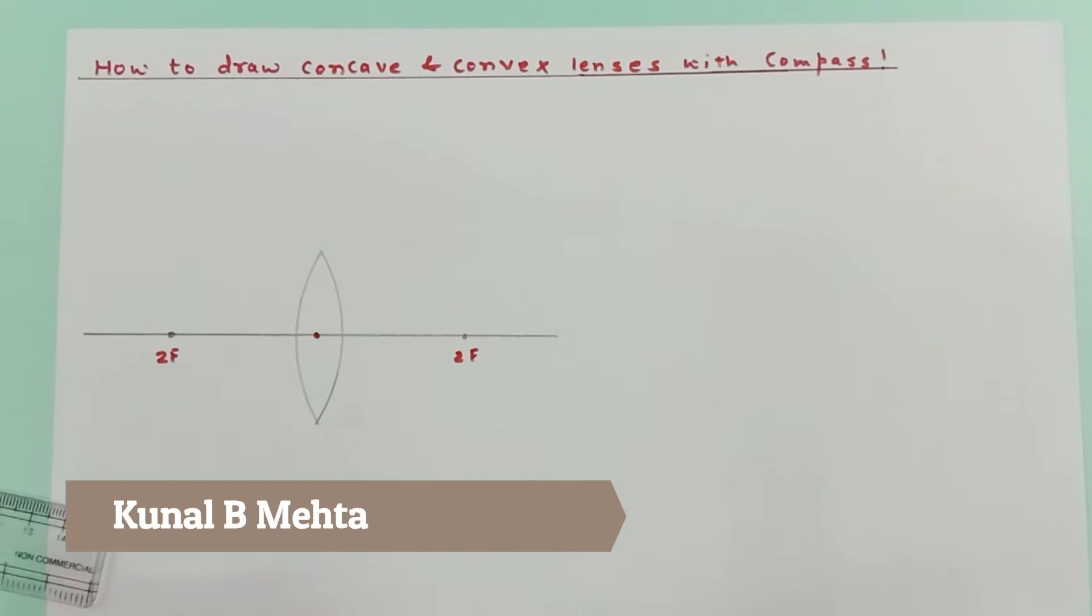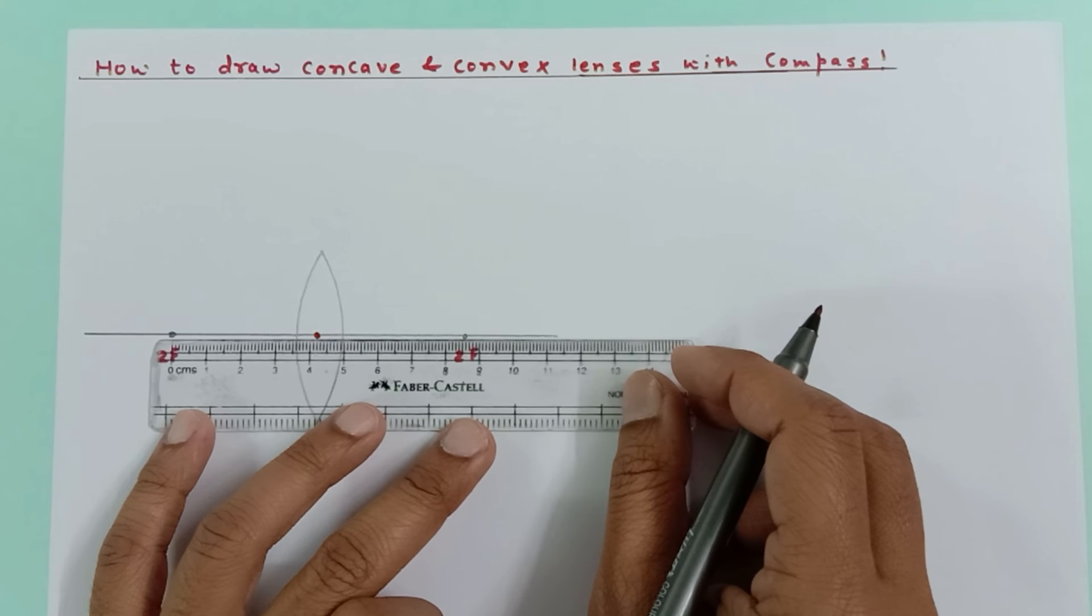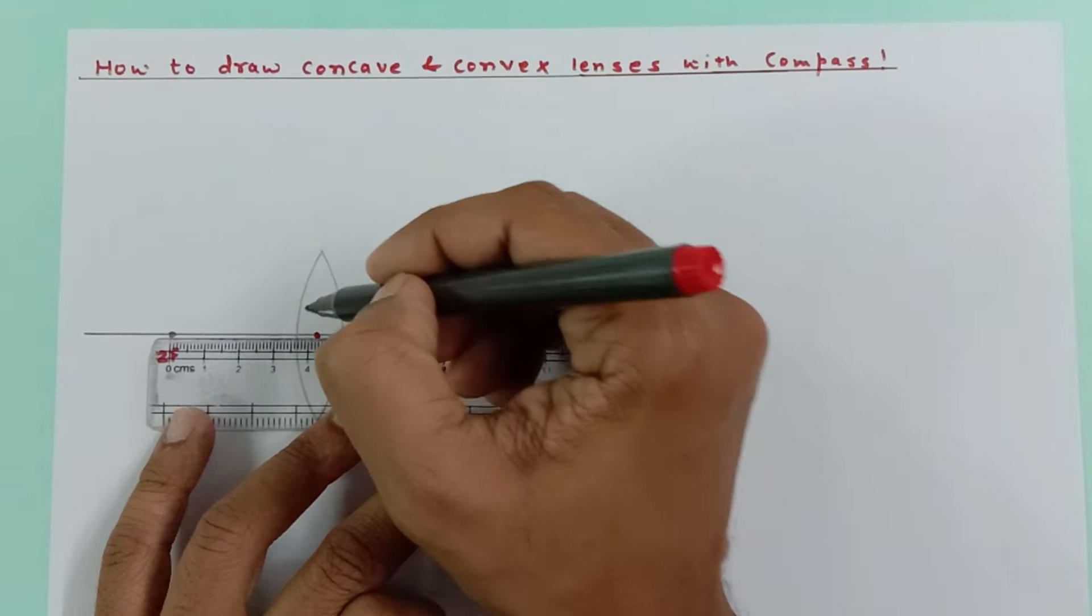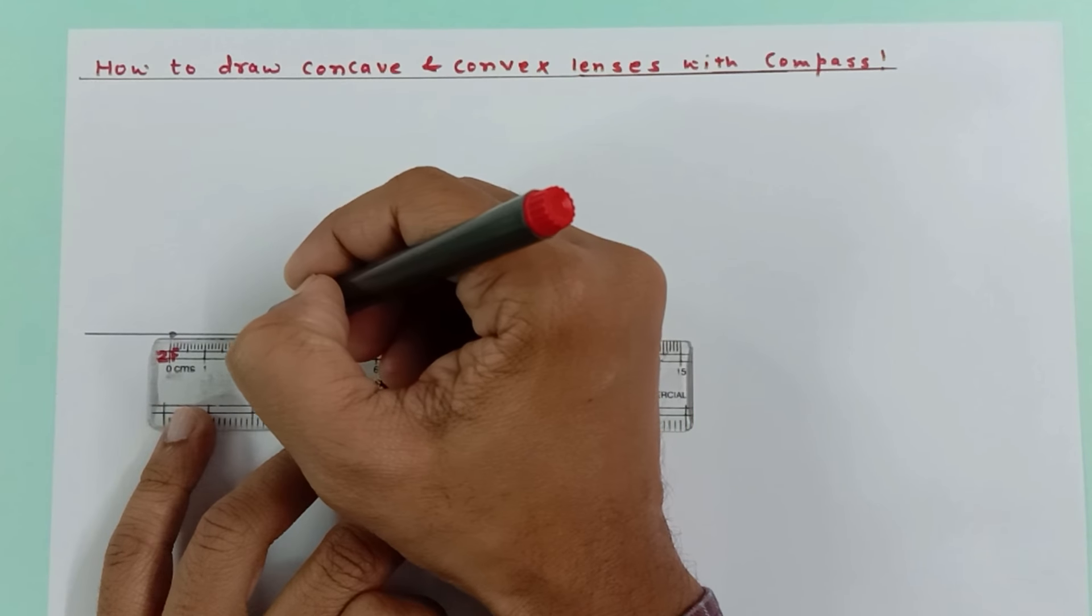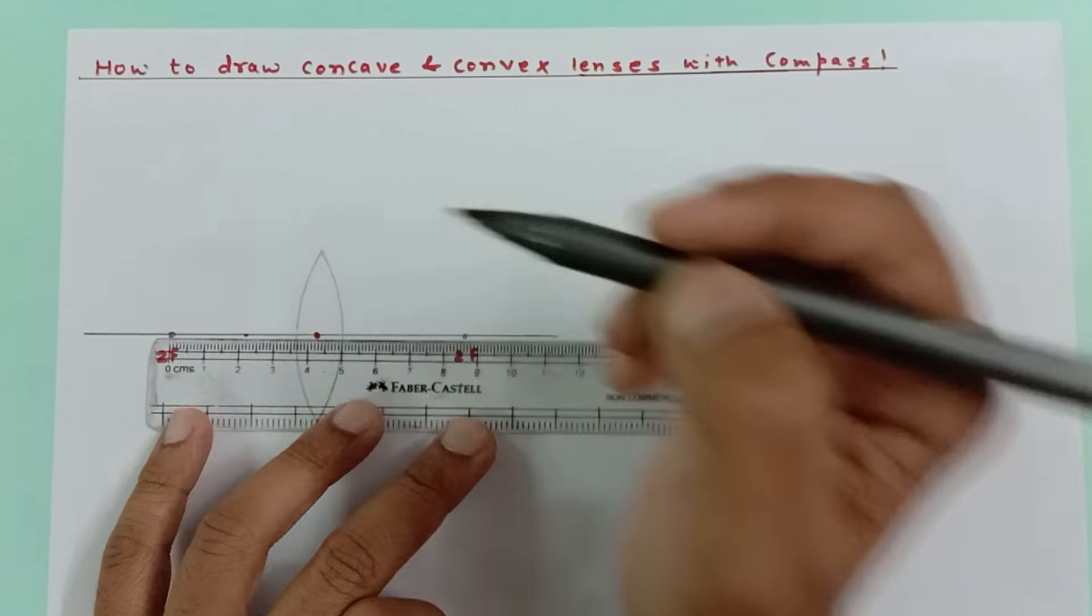Now this is the optical center. If you know what the optical center is, we can of course find out the midpoint. Since this is 2F, this is 4.3, so approximately 2.12 - somewhere over here would be the F.